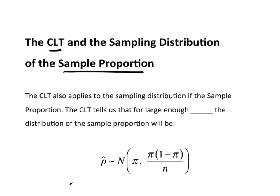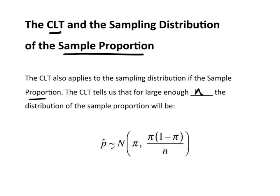Now the CLT also applies to the sampling distribution of the sample proportion. The CLT once again tells us that for large enough n sample size, the distribution of the sample proportion will follow this. P-hat, the sample proportion will be normal,